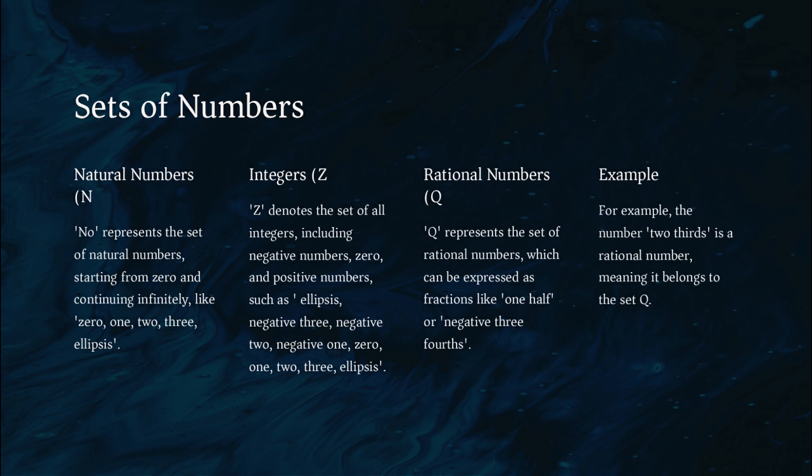Z denotes the set of all integers, including negative numbers, 0, and positive numbers, such as negative 3, negative 2, negative 1, 0, 1, 2, 3, and so on.